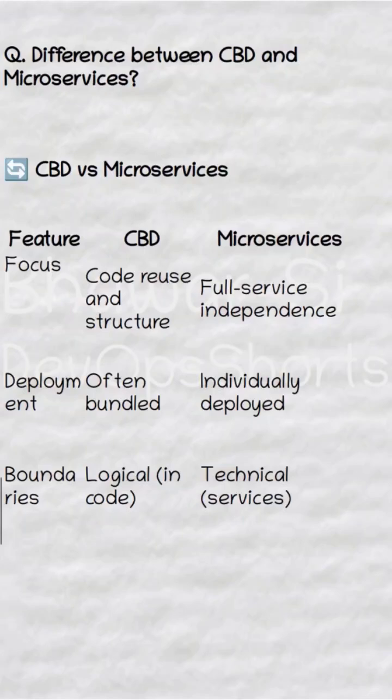In CBD a full bundle is deployed all at once, whereas microservices are deployed individually in a distributed environment.